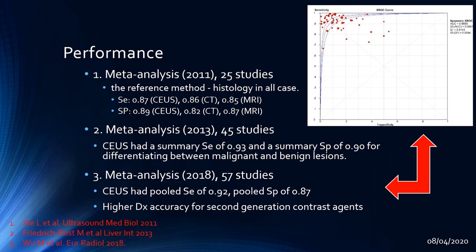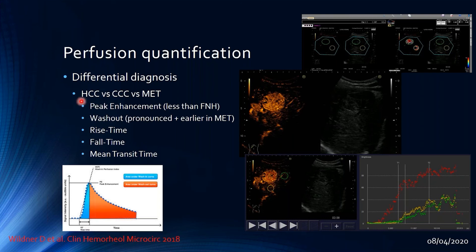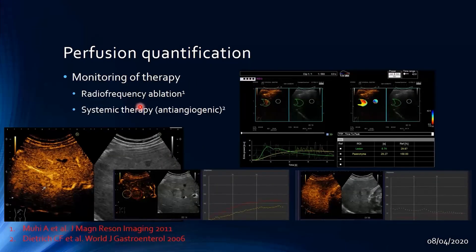Perfusion quantification is an active research field. Time-intensity curve analysis yields parameters including peak enhancement, washout timing — which is more pronounced and earlier in metastatic lesions compared to HCC and cholangiocarcinoma — rise time, and fall time. Perfusion quantification is also useful for monitoring therapy responses, including radiofrequency ablation and systemic anti-angiogenic therapy, such as for colorectal carcinoma or hypervascular neuroendocrine tumor liver metastases.